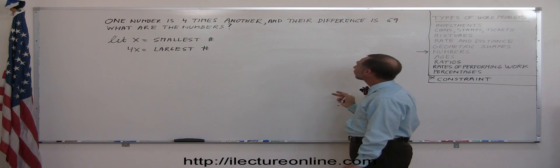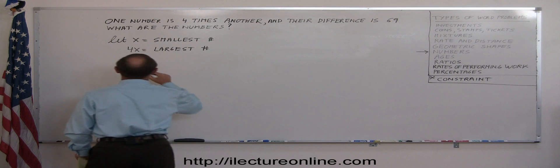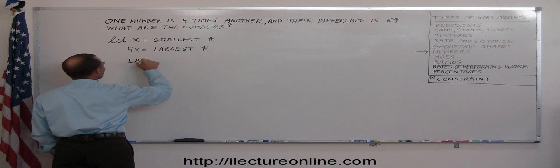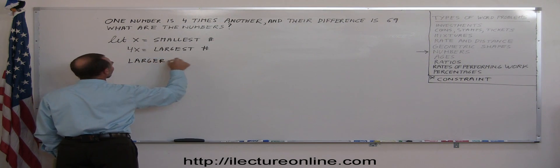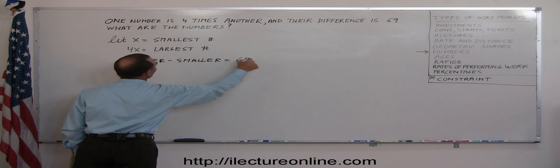It tells us that the difference between the two is 69, so that's the constraint that's going to help us. So the larger minus the smaller equals 69.